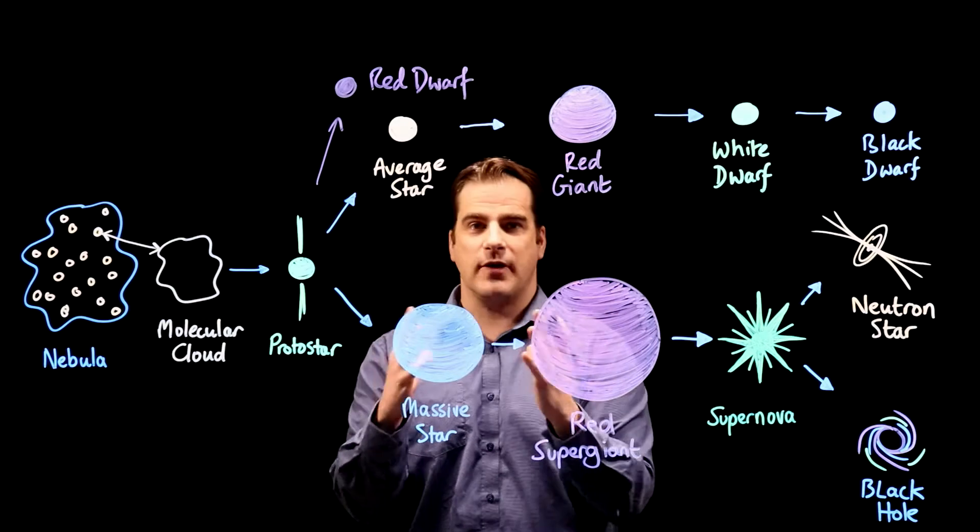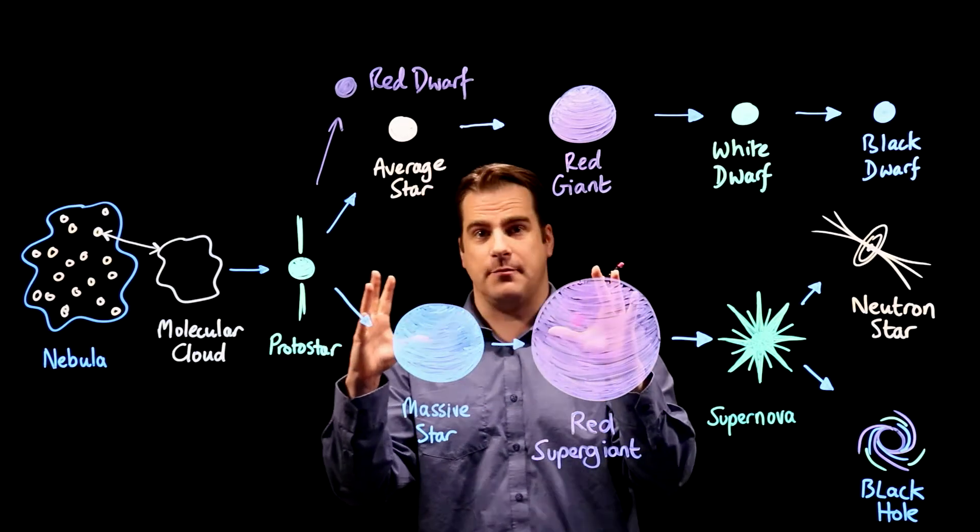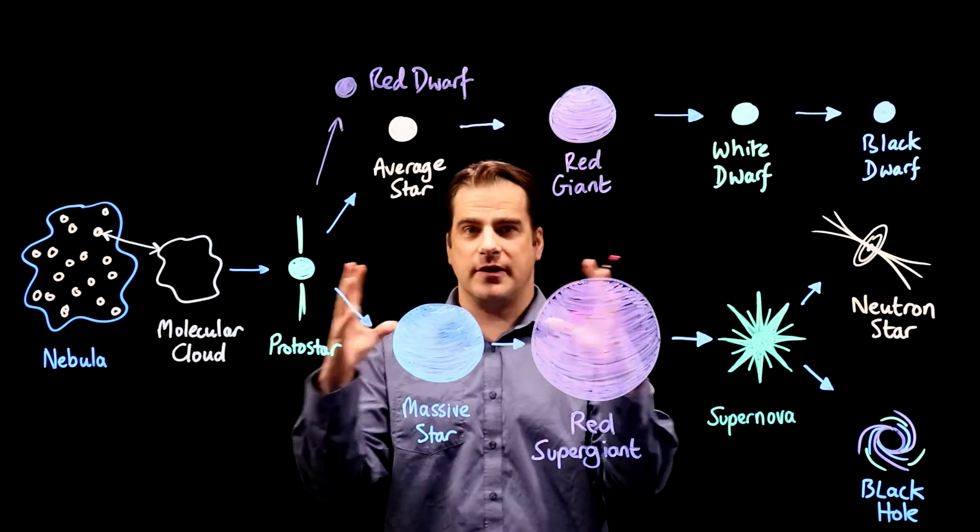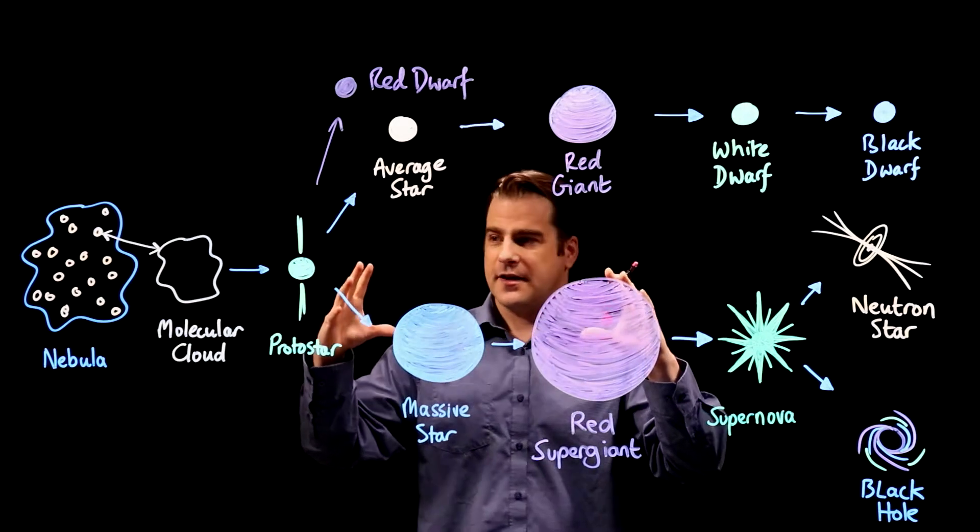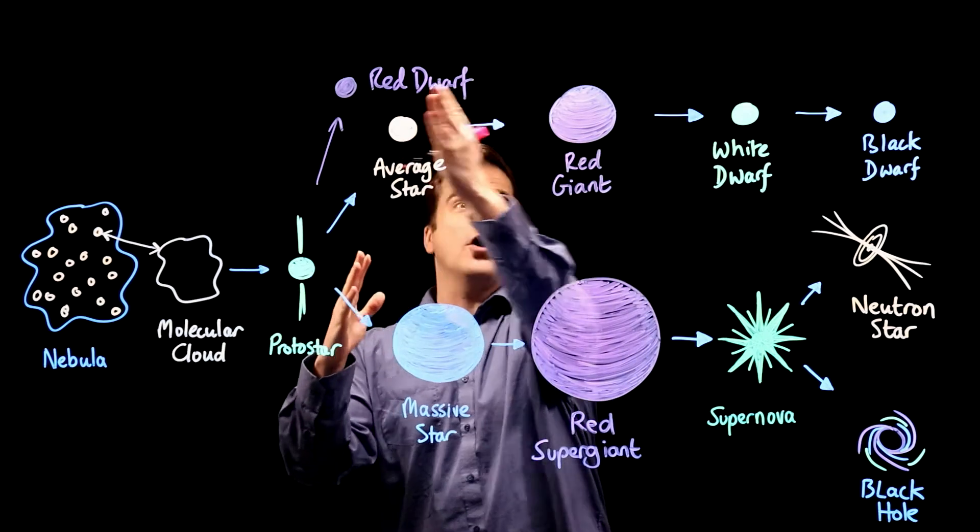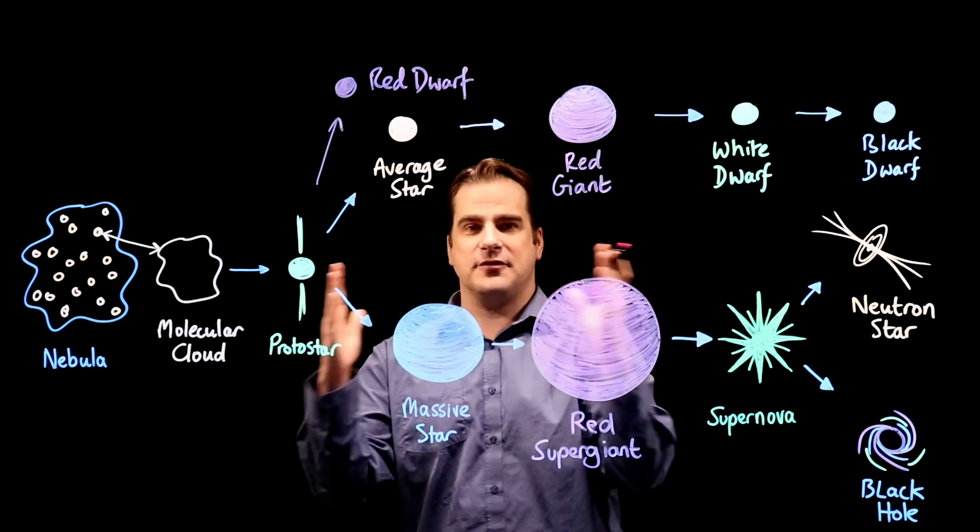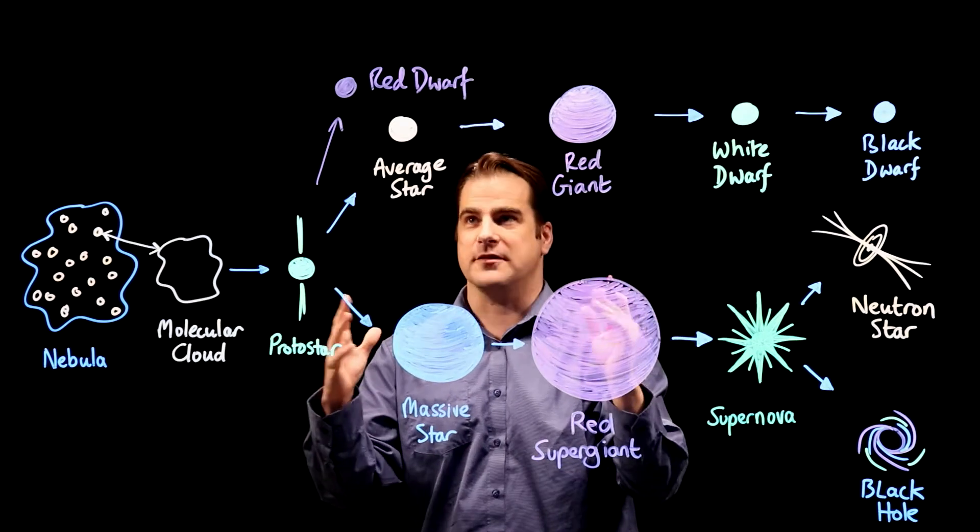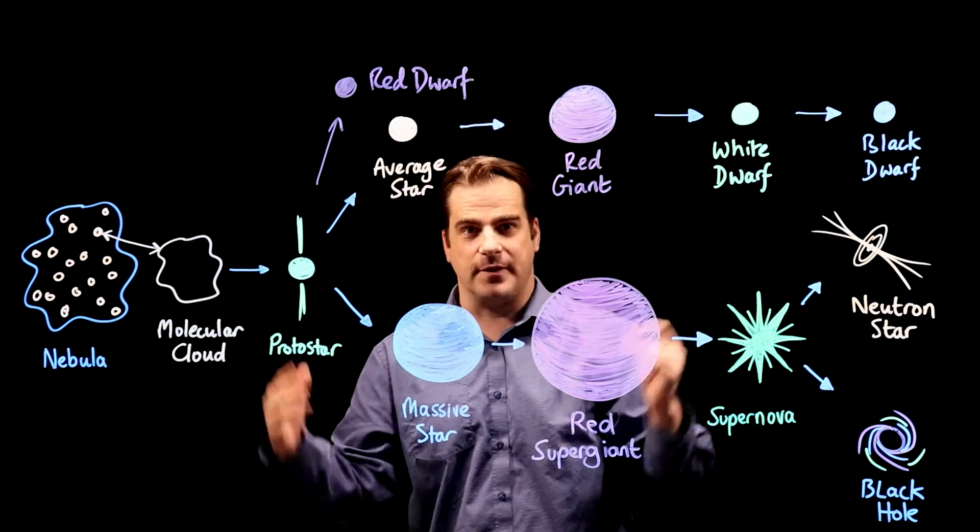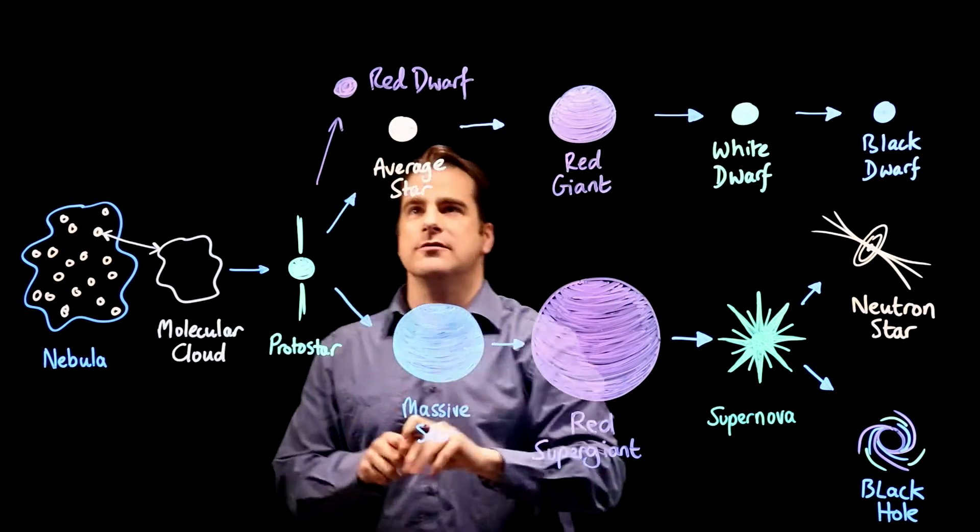So all the red dwarves that exist in the universe, the universe is only about 13.7 billion years old. So all the red dwarves in the universe, they're just sitting there, they haven't gone on beyond the stage of being a red dwarf, because their lifespan is 100 billion years about, and the universe is only 13.7 billion years old. So you can get red dwarves.